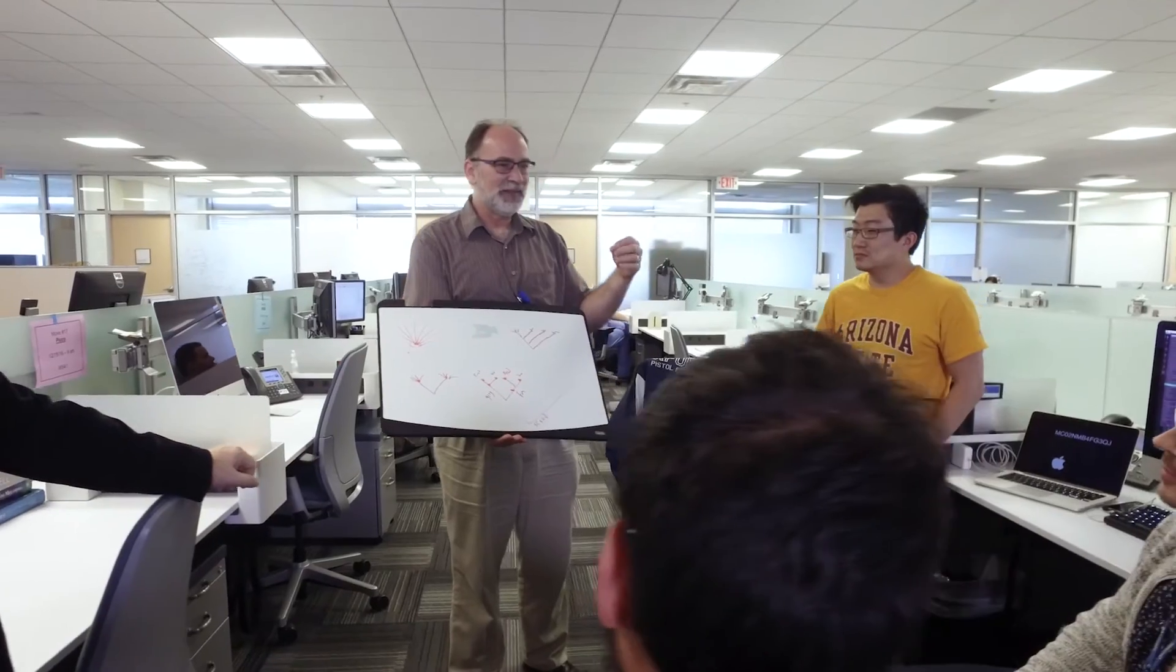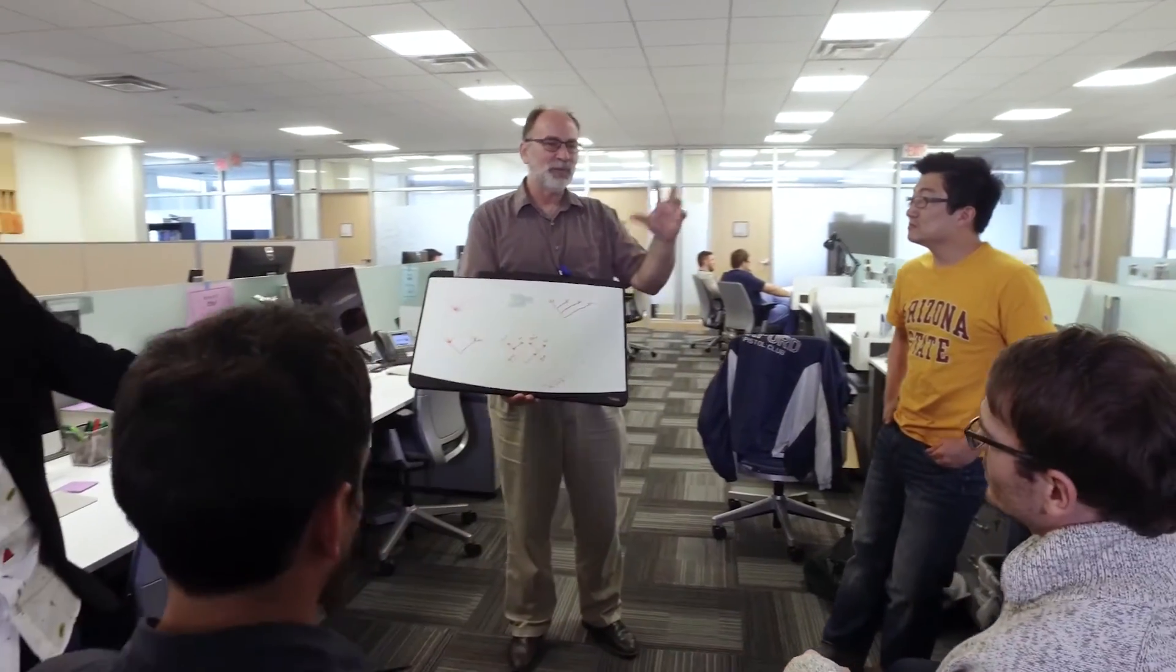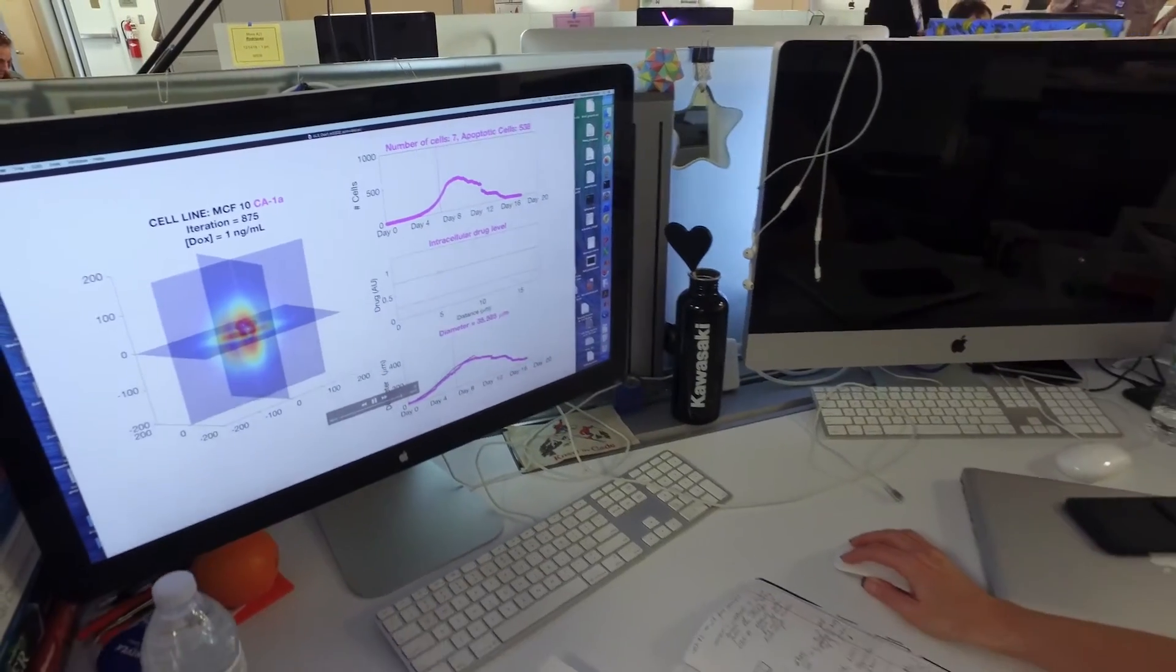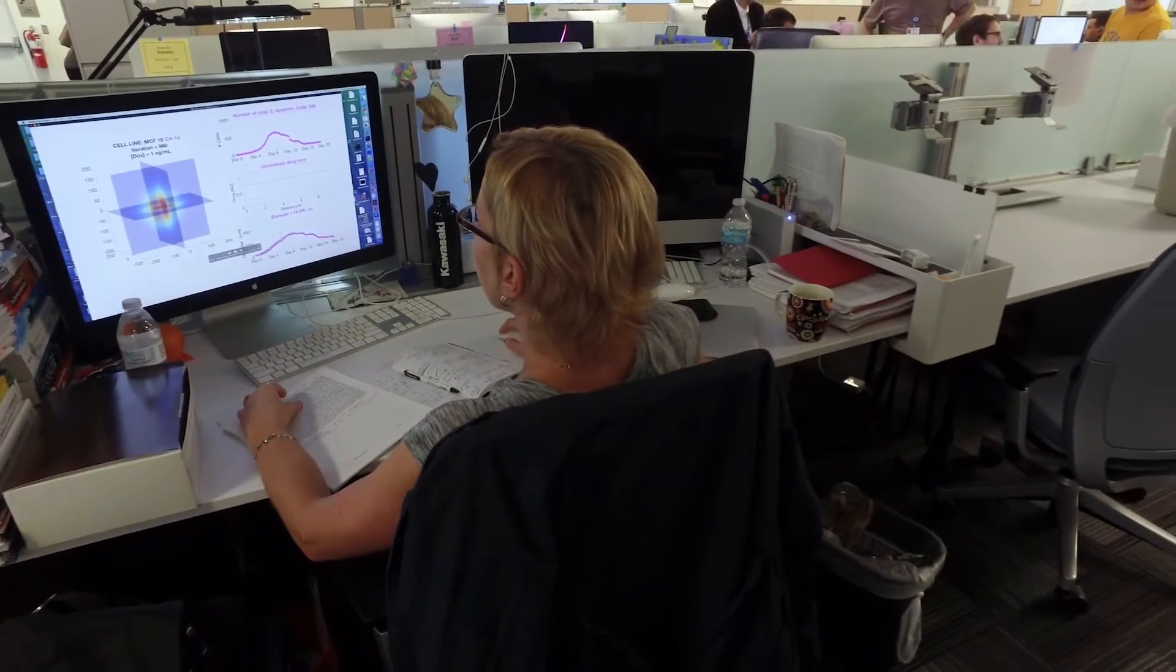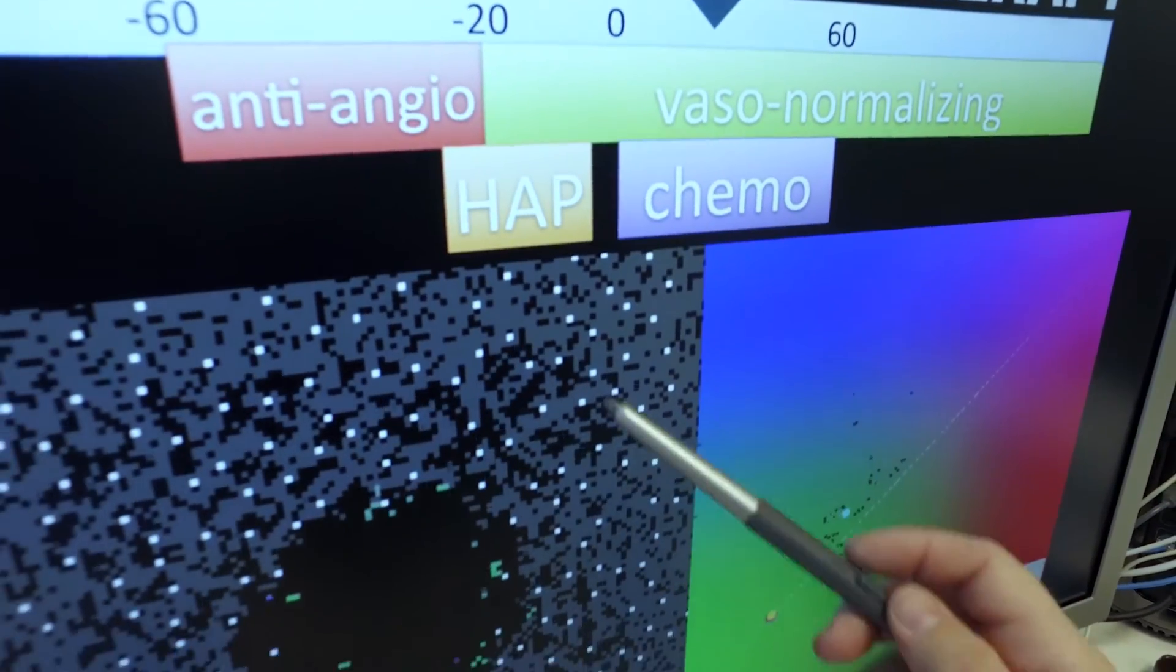Using the theory of evolution, Dr. Anderson and his team in Moffitt's integrated mathematical oncology department use math formulas to determine the best course of treatment that allows a patient to control the cancer and actually live with the disease.